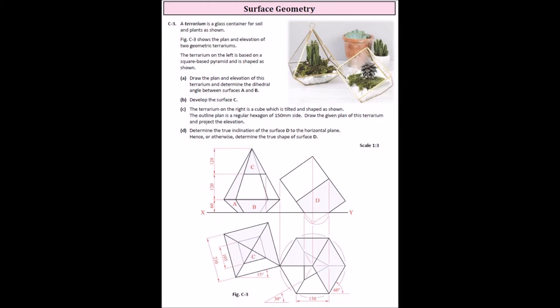So after talking about C1 there, so C3 is your surface geometry. Again, nice question. It was roof and geometry basically. It was your angles, the dihedral angles of the surfaces. It was straightforward enough. Even part D, where you had determined a true inclination of surface D to the horizontal plane. You had a true length already because the bottom line there of surface D is resting on the XY line. So therefore, it's a true length in plan. So you already had a true length. You just had to do an auxiliary elevation of it. So C3 should have been a nice question.